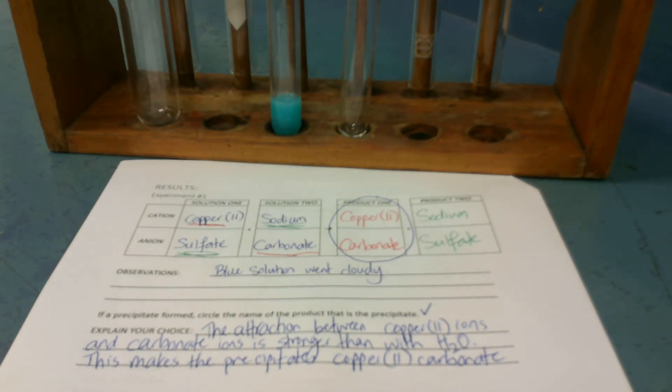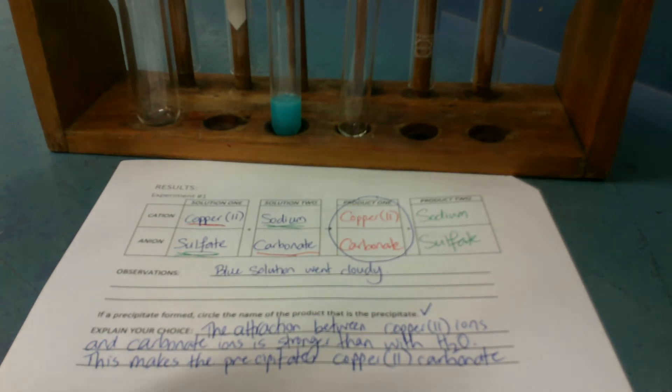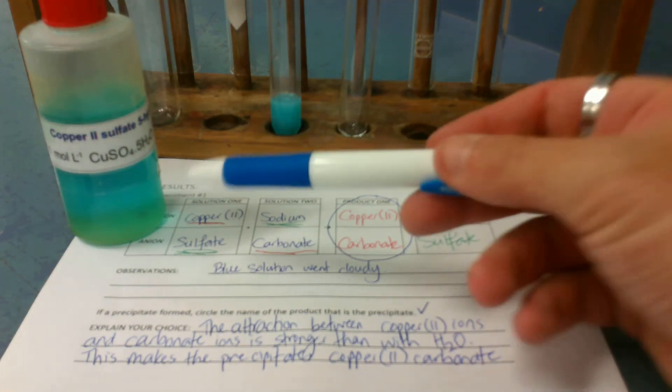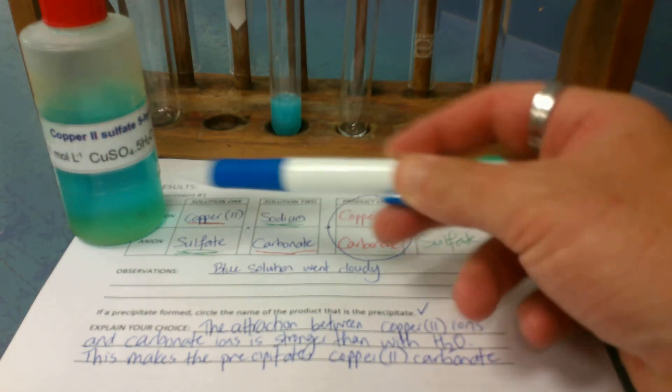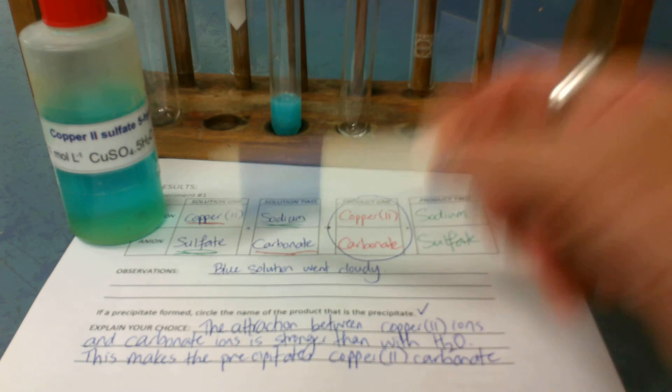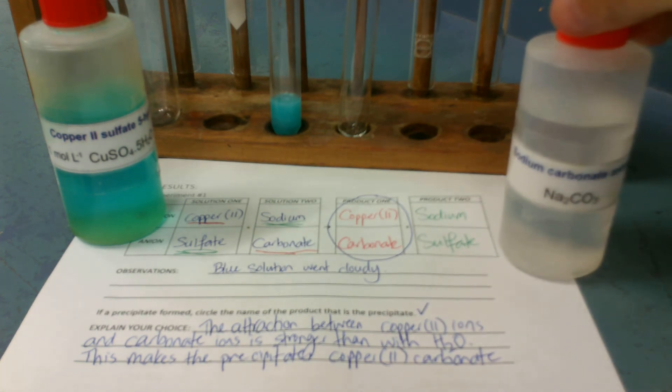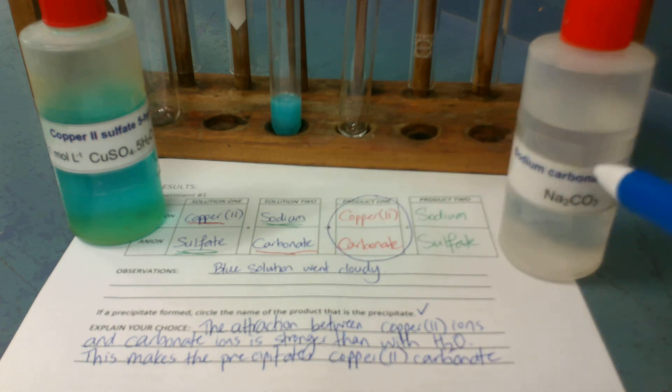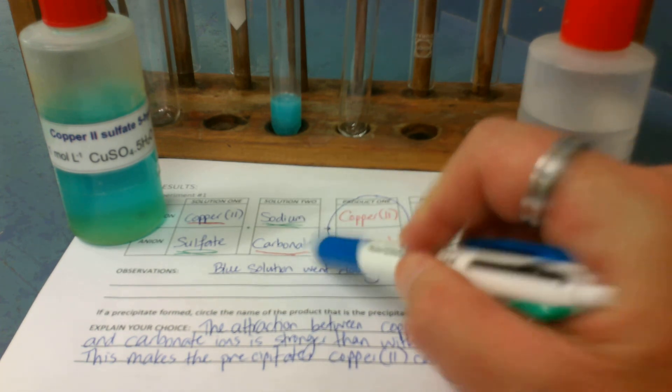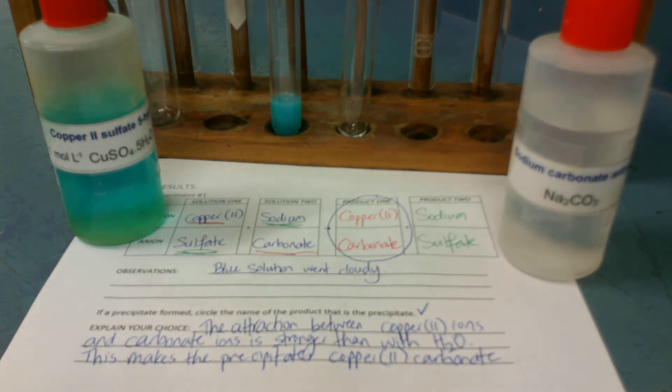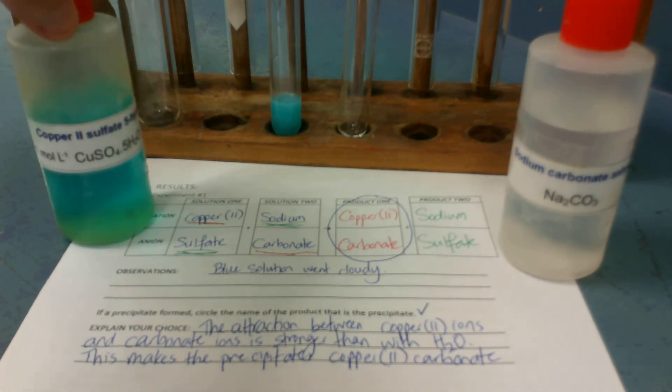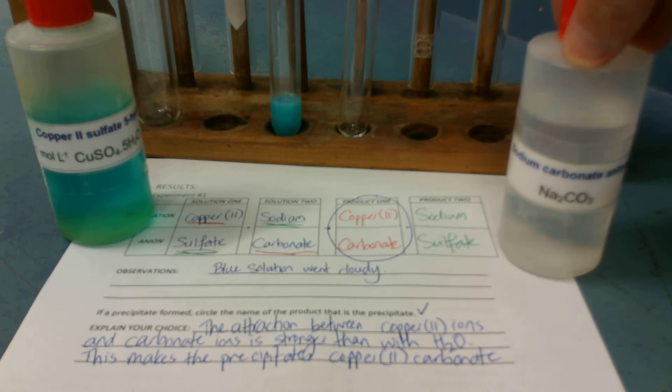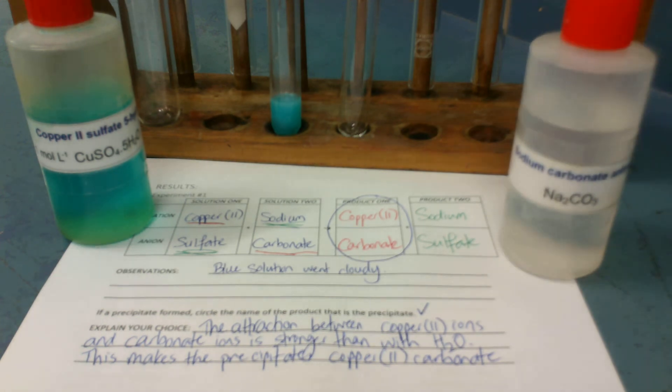All right, so just a quick recap. Get one solution, call it solution 1. Put its first name in the top box, its second name in the second box. Get another chemical, call that solution 2. The first name goes in the top box, the second name in the bottom box. Then, put about half a centimetre of solution 1 into a test tube, add a few drops of solution 2, and observe what happens.